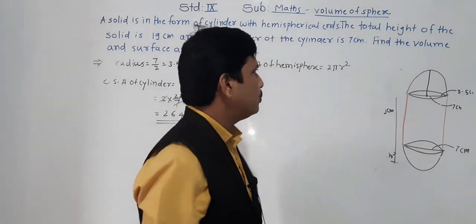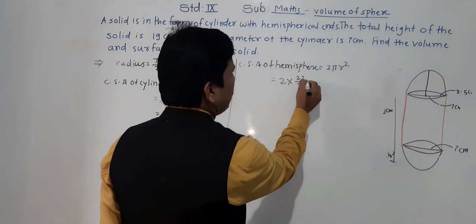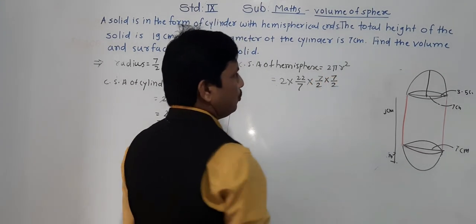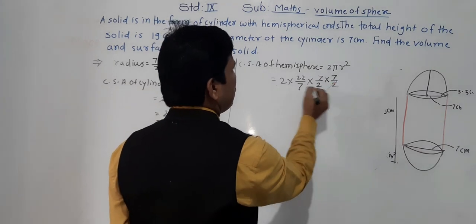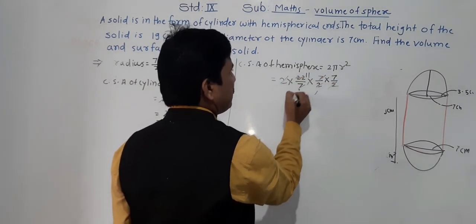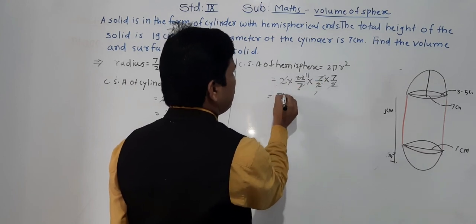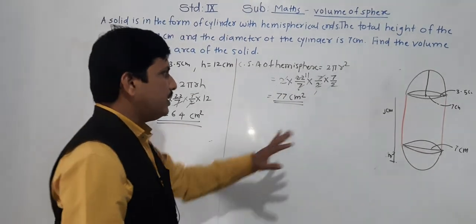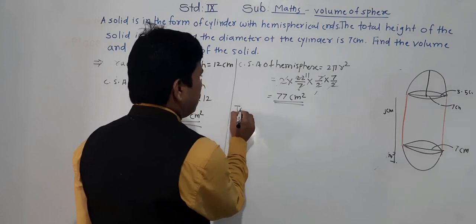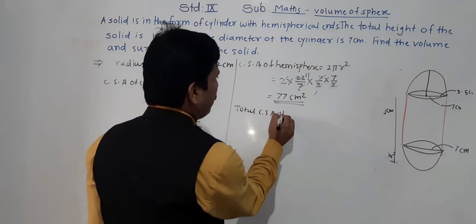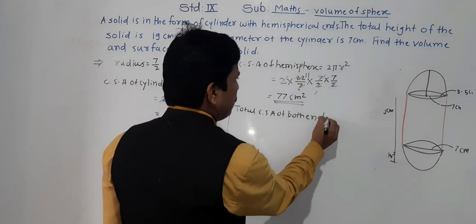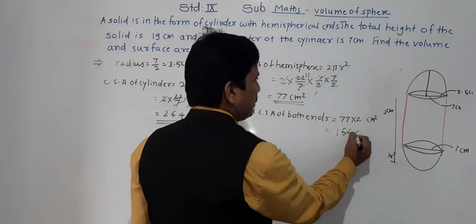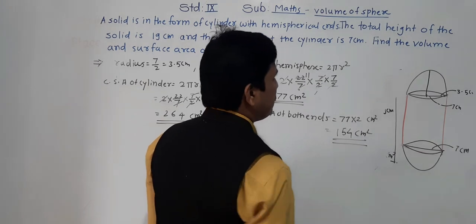CSA of hemisphere = 2πr² × (for both ends, multiply by 2) = 2 × (22/7) × (7/2)² = 2 × 11 × 7/2 = 77 cm² per hemisphere. For both ends: 77 × 2 = 154 cm².